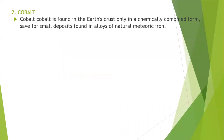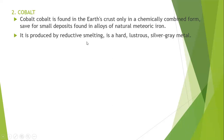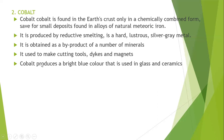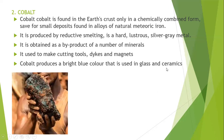Cobalt is another mineral abundantly found in Zambia. Cobalt is found in the earth's crust only in a chemically combined form, found in alloys of natural metallic iron. It is usually a byproduct of other minerals. It is produced by reductive smelting and is a hard, lustrous, silver-gray metal. It is used to make cutting tools, dyes, and magnets. Cobalt also produces a bright blue color used in glass and ceramics.